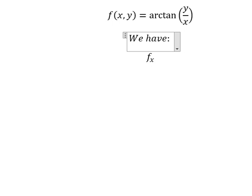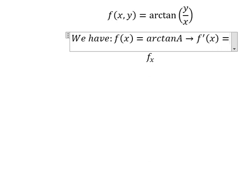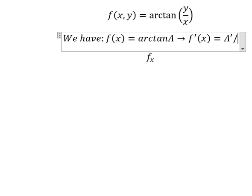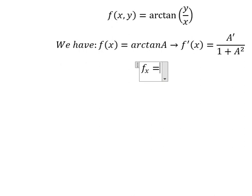For example, we have arctan of A. If we do the first derivative f of x, we need to do the first derivative of A over 1 plus A squared. Now because we need to do the first derivative with respect to x, if we do the first derivative of arctan we will have like this.